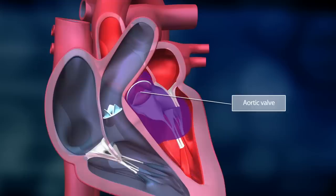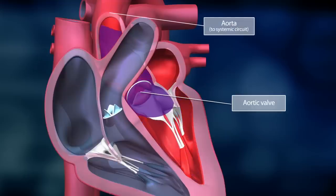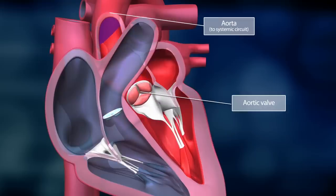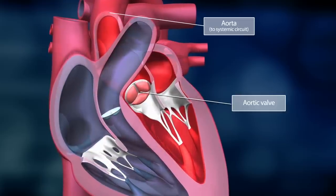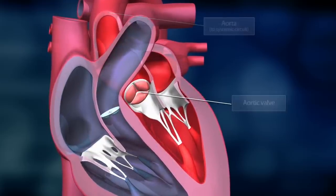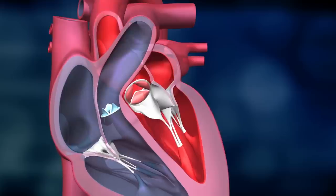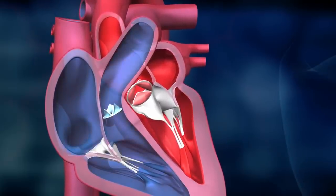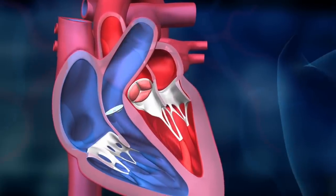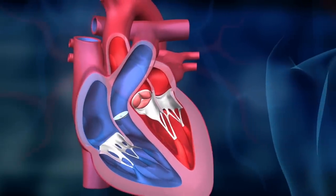The oxygen-enriched blood flows into the aorta and is distributed to every organ in the body via the blood circulatory system. The aortic valve quickly closes to prevent blood from flowing back into the left ventricle. At the same time, a new contraction takes place in the right ventricle and the systemic blood circuit begins anew.